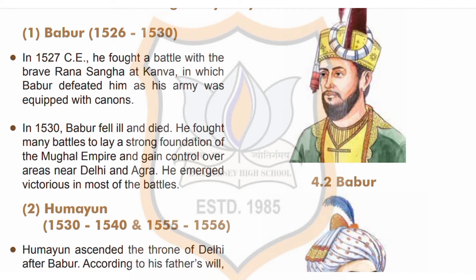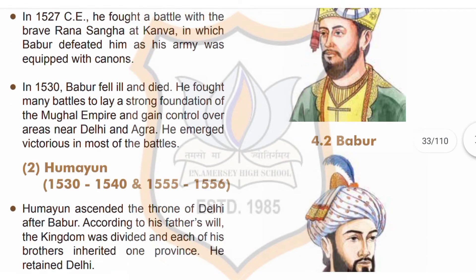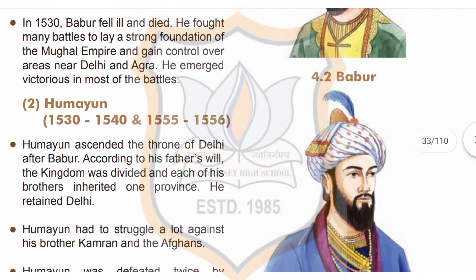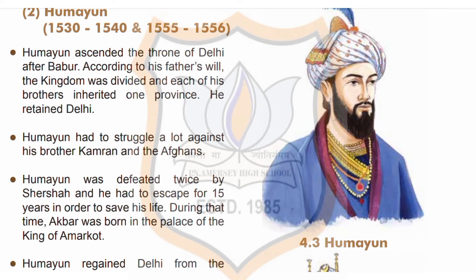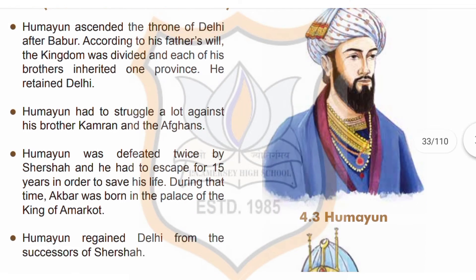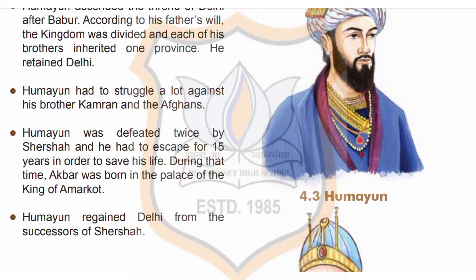Children, you can see picture 4.2 of Babur. Next is Humayun, period 1530 to 1540, then 1555 to 1556. Humayun ascended the throne of Delhi after Babur. According to his father's will, the kingdom was divided and each of his brothers inherited one province. He retained Delhi.